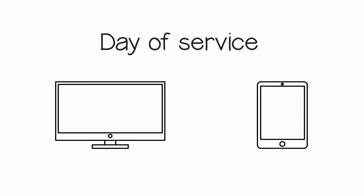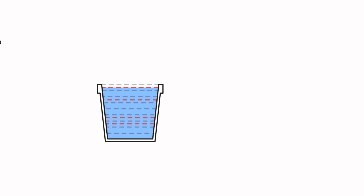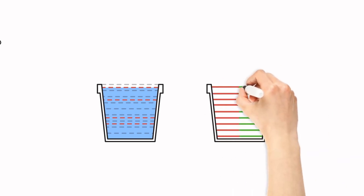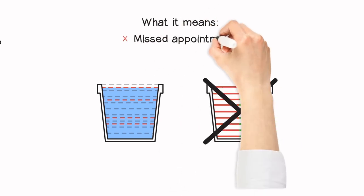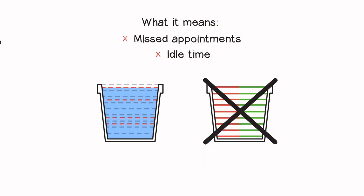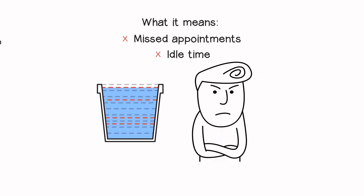But what if the field employee gets stuck in traffic? Travel for one job may take longer and another may take less. Or what if the job duration is longer than planned? The actual travel time and job duration usually do not match the average from the bucket, and can lead to missed appointments or idle time. And the one thing you can be sure of is that your average customer will be upset.